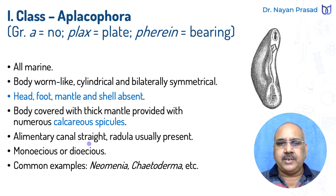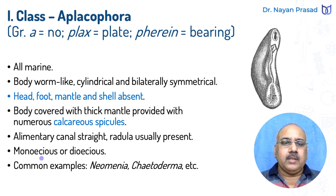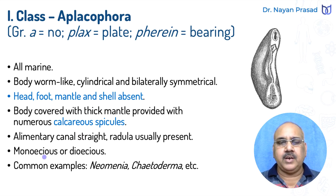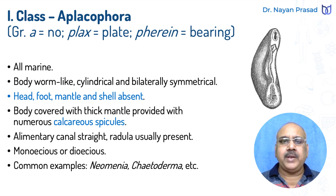The alimentary canal is straight and radula is usually present. Radula is a kind of rasping organ — it breaks down the food into fine particles. The members may be monoecious or dioecious. So here unisexual and bisexual, both types of individuals are under Aplacophora. Common examples are Neomania, Ketoderma, etc. This is the diagram of Neomania.